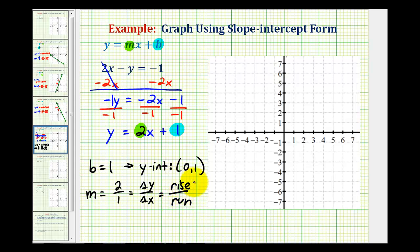And from this information, we can graph the line. We'll first plot the y-intercept, which is the point 0, 1 here, and then we can determine additional points by using the slope of 2 over 1.